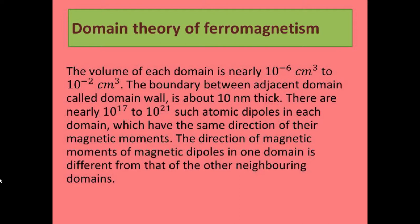The thickness of the domain wall is 10 nm. There are nearly 10 to the power 17 to 10 to the power 21 atomic dipoles in each domain, all having the same direction of their magnetic moment. The direction of the magnetic moment in one domain is different from that of other neighboring domains.